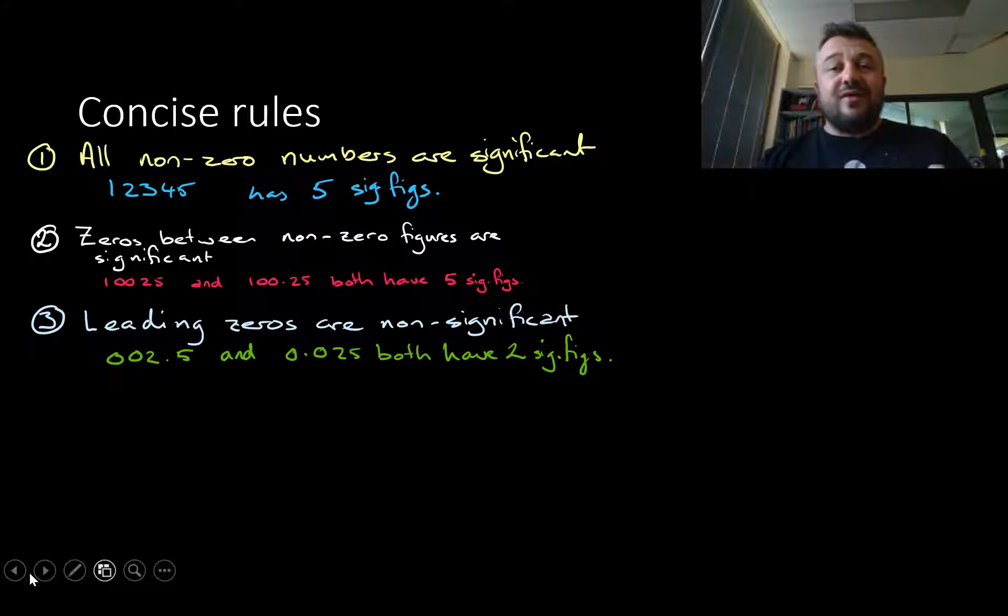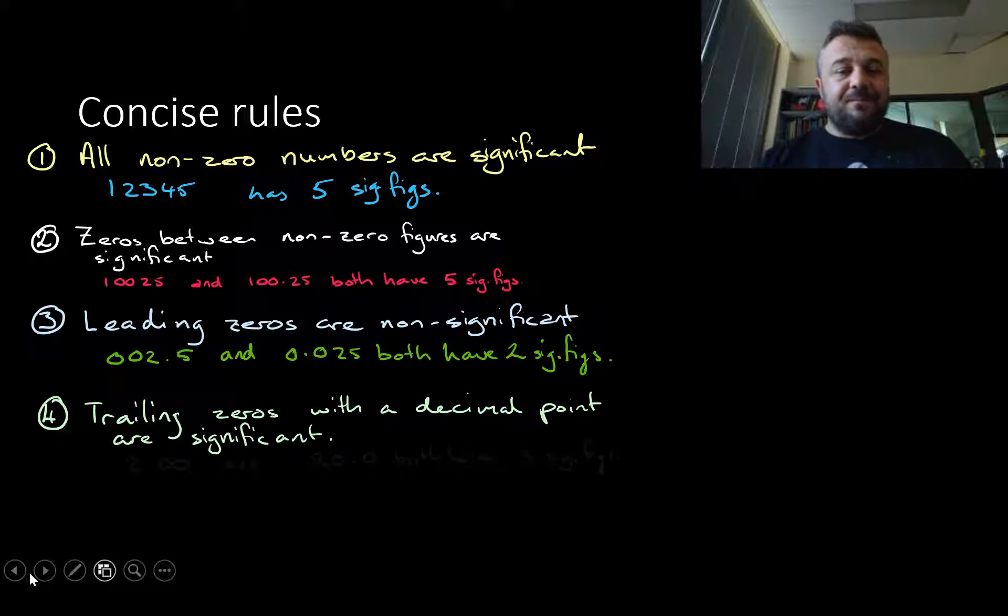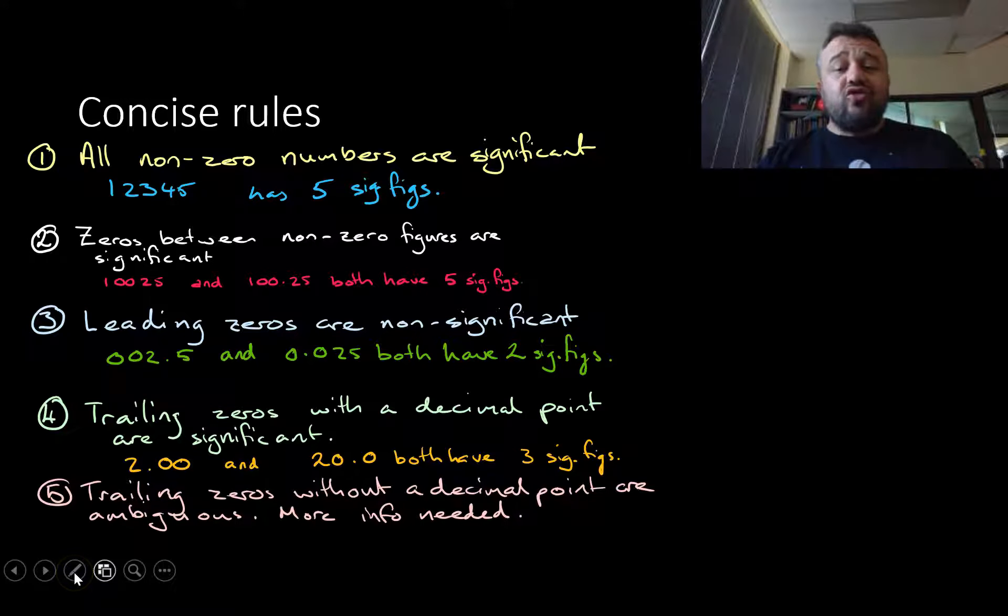Trailing zero figures with a decimal point are significant figures. I'll show you what this means. So 2.00 and 20.0 both have three significant figures. However, trailing zeros without decimal points are ambiguous. We need more information.